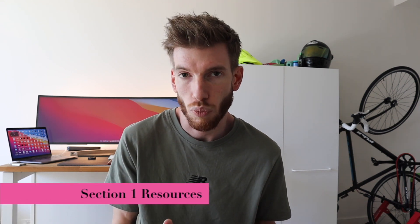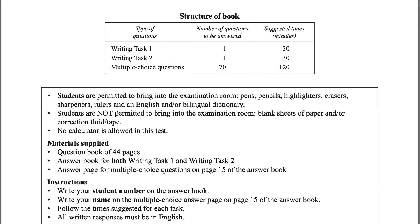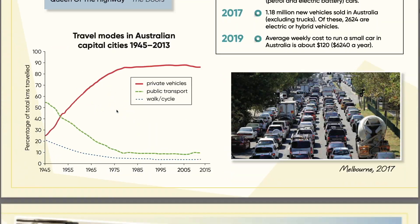The first one for Section 1 is VCE GAT papers. As a tutor I'm already pretty familiar with this test. In Victoria, year 12 students sit something called a General Achievement Test, or the GAT, which tests general comprehension, literacy, and numeracy skills, as well as some technical skills. For Section 1 it's really useful because there are passages you have to read and then it asks questions based on comprehension, analysis, or inference.